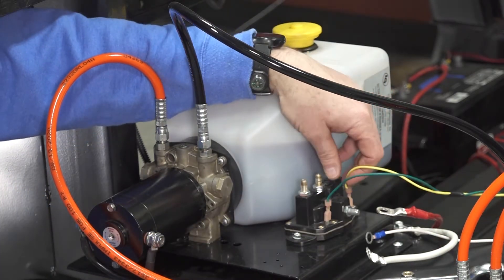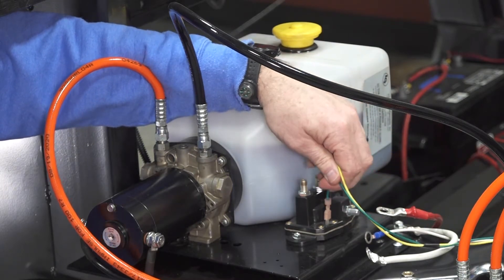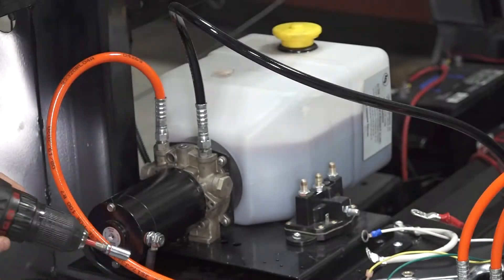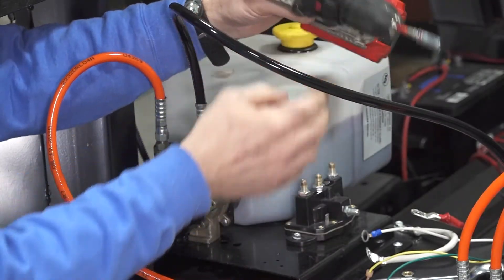Remove the green extend wire and yellow retract wire from the spade terminals on the solenoid. Now you can remove the mounting screws and remove the solenoid from the power unit.